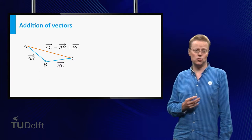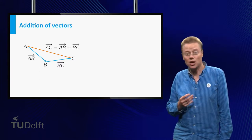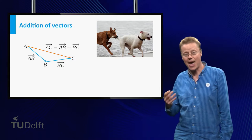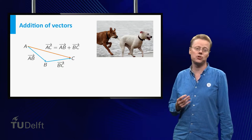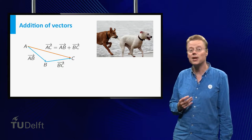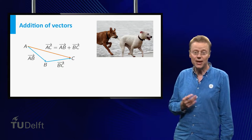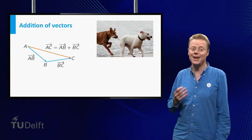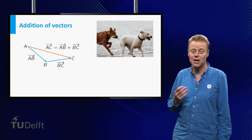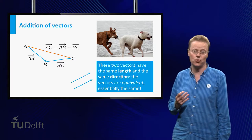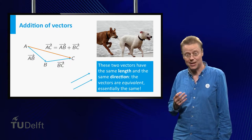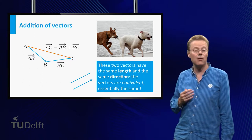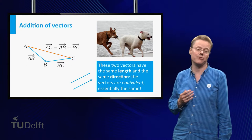Now, what to do if the two vectors are not nicely attached — in the sense that the head and the tail of the two vectors are not connected? Well, it is important to realize that for vectors only length and direction are important. In that sense, the two vectors given here are actually equivalent.